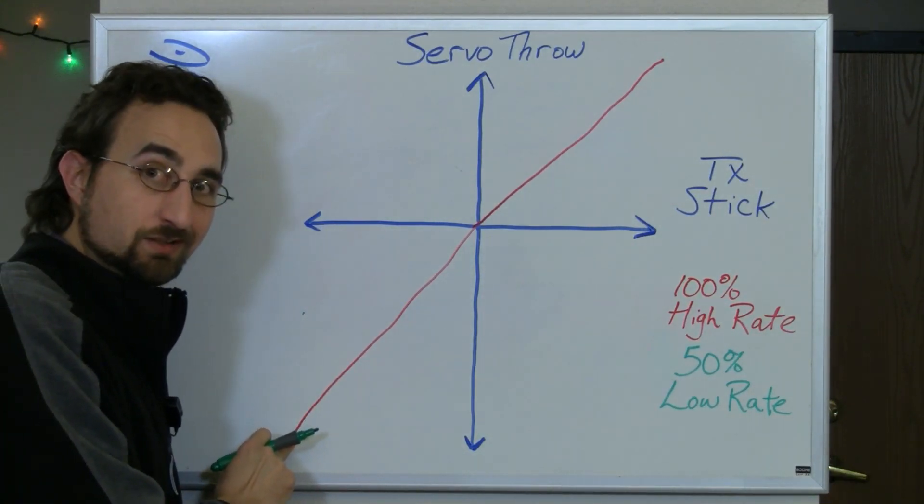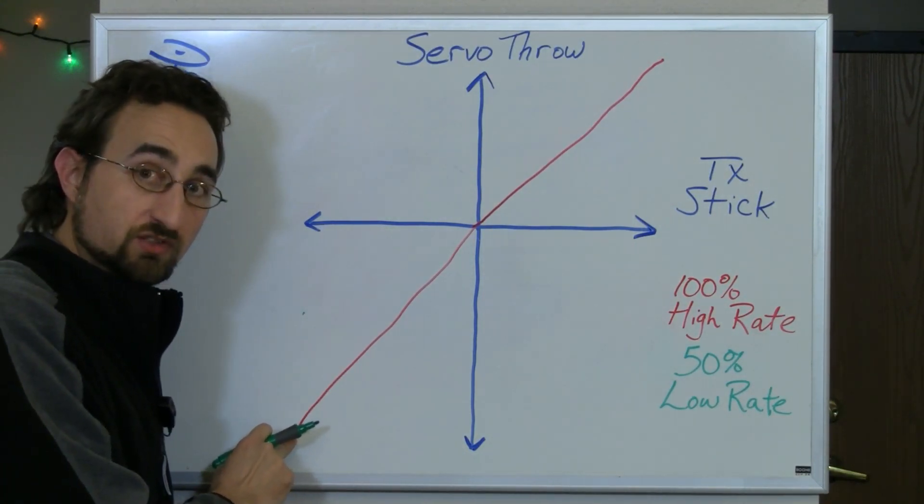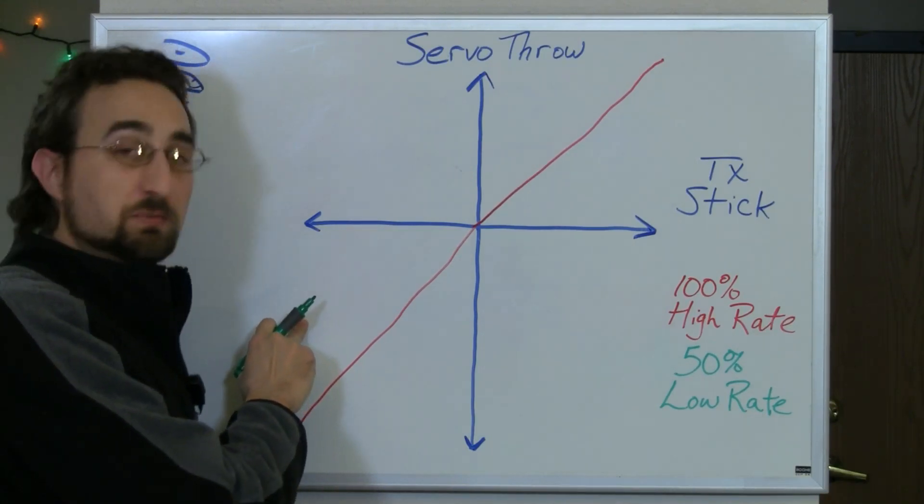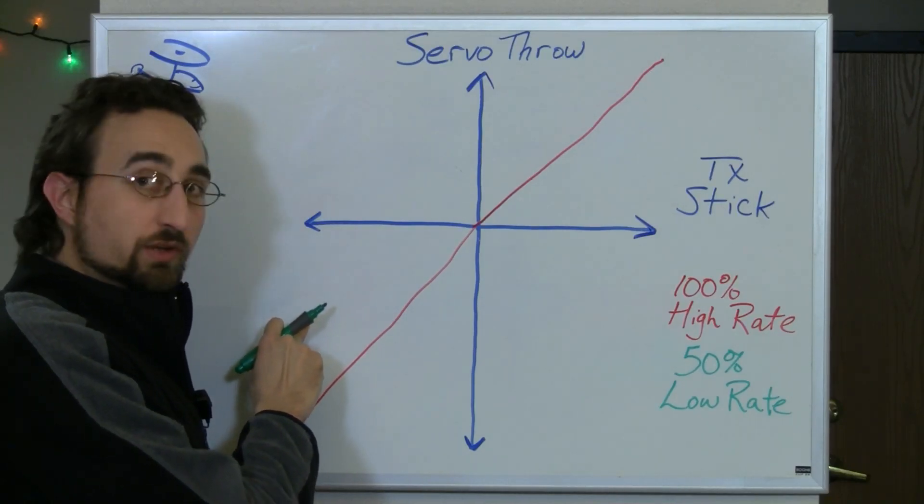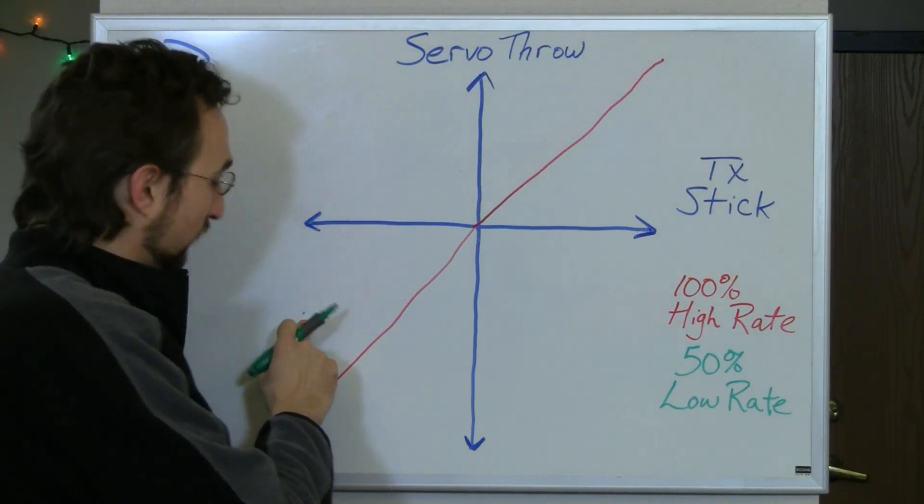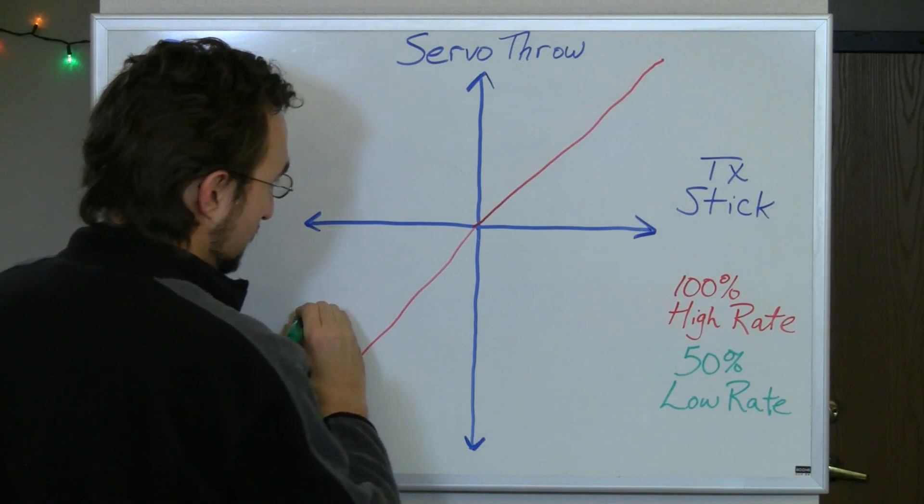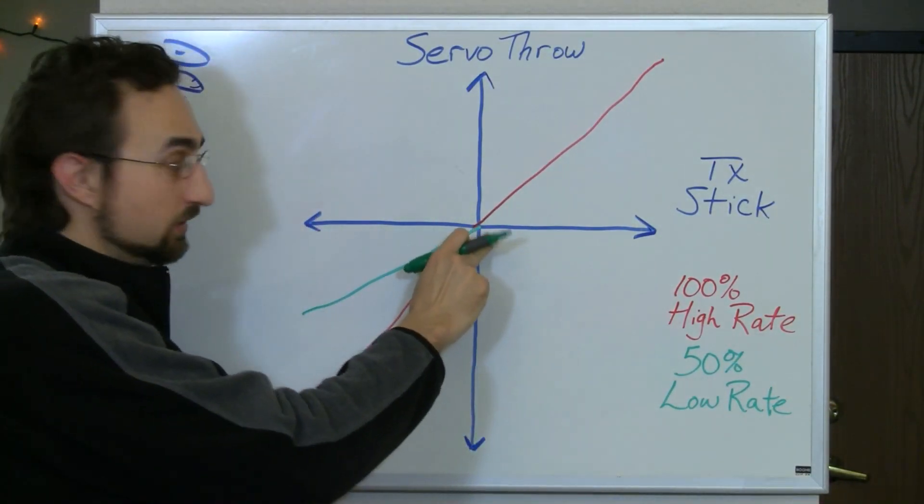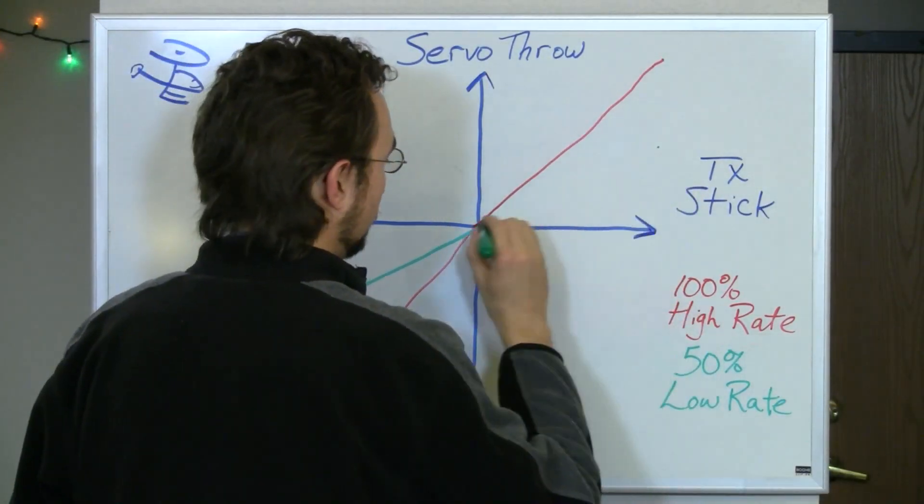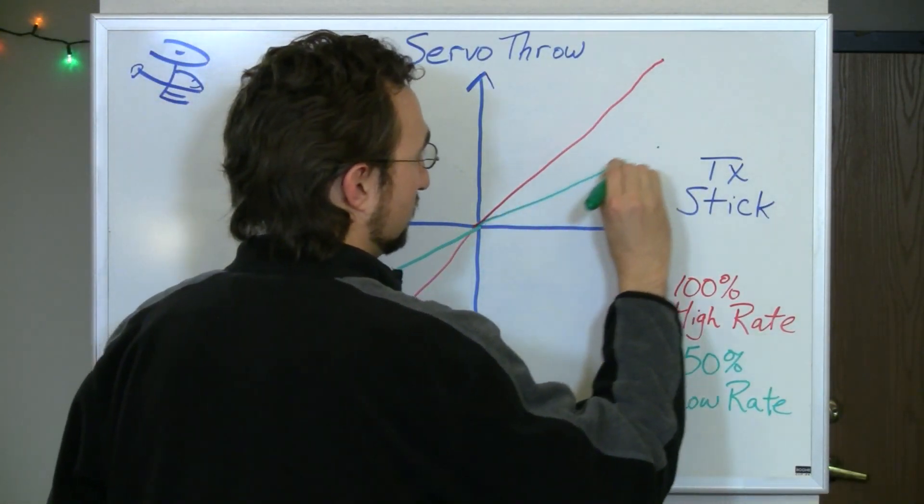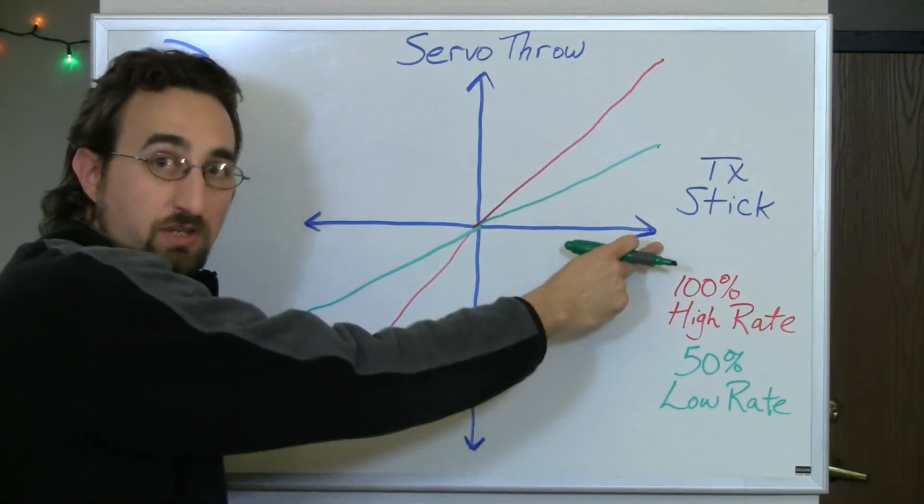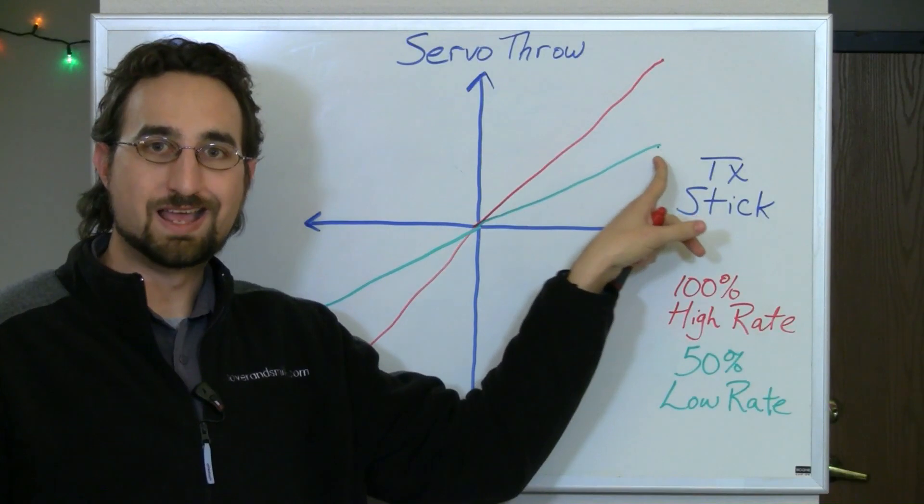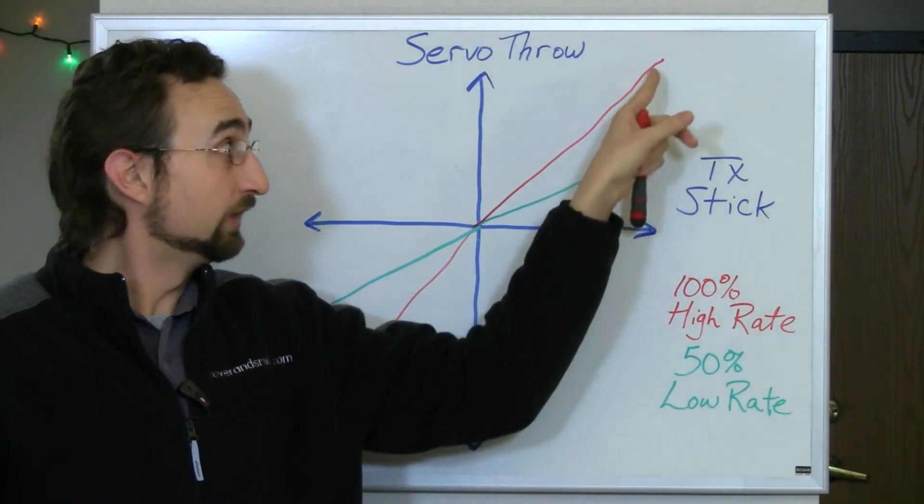This means that if I move my transmitter stick all the way back to this point, when I was set on my high rate, my servo movement, my servo arm moved all the way down to its maximum endpoint. But if I've had a 50% on my low rate, that means the servo arm is only going to move half of what it could before. So it's going to start out here and then go back towards center. And when my servo arm is centered, my transmitter stick is centered, and then go back off to its endpoint here with my transmitter stick being all the way in its opposite position that it was before. But my servo arm is only moving half as far as it was when I was at my high rate.